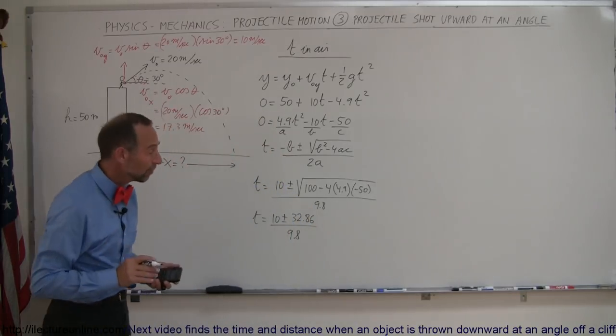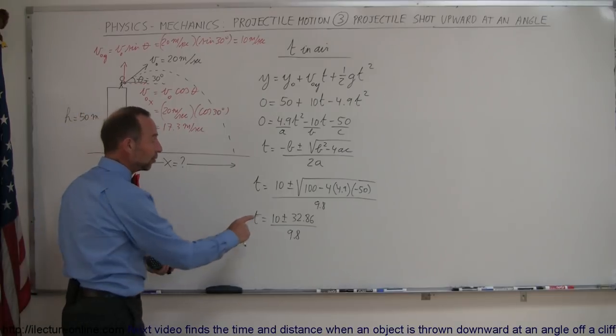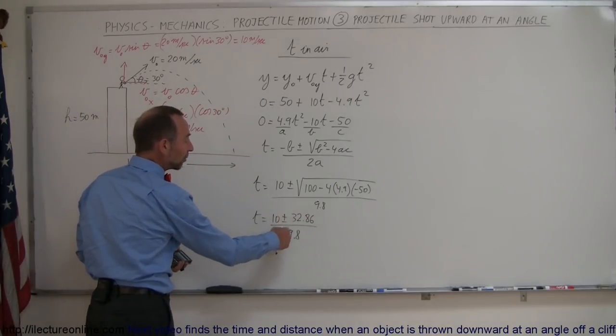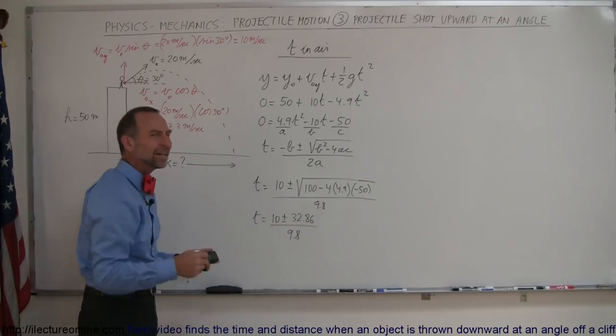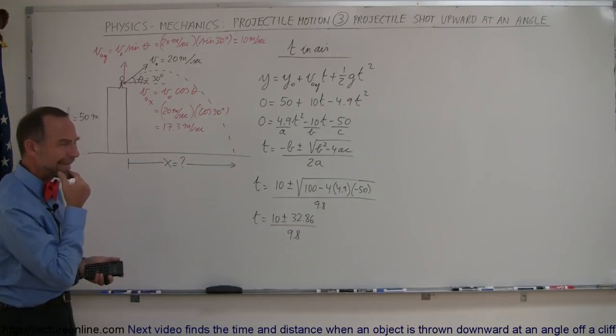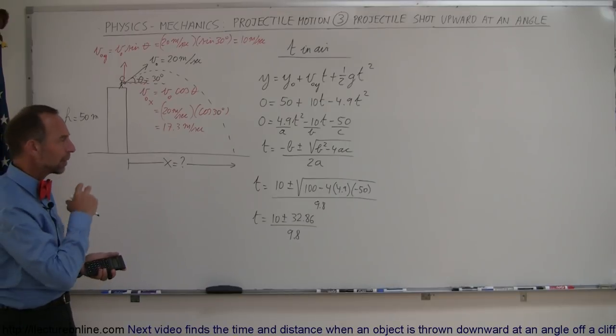Now notice when you look at this, if I use the plus option, you get a positive answer. If I use the negative option, since this is bigger than this, you'll get a negative answer. Now you say, well, how can you get negative time? You can't go backwards in time.